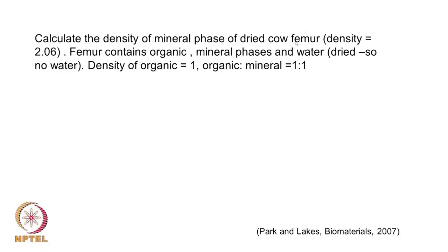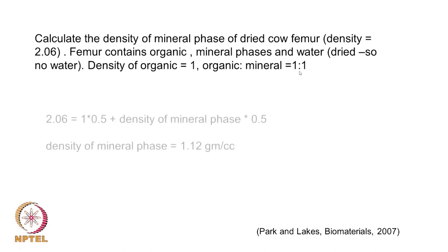Calculate the density of the mineral phase of a dried cow femur. The density is 2.06 for this dried femur. It contains the mineral phase, like hydroxyapatite, an organic phase like collagen, and water — but since it is dried, there is no water. The density of organic is 1, and the organic to mineral ratio is 1:1. So we can use the mixture rules.